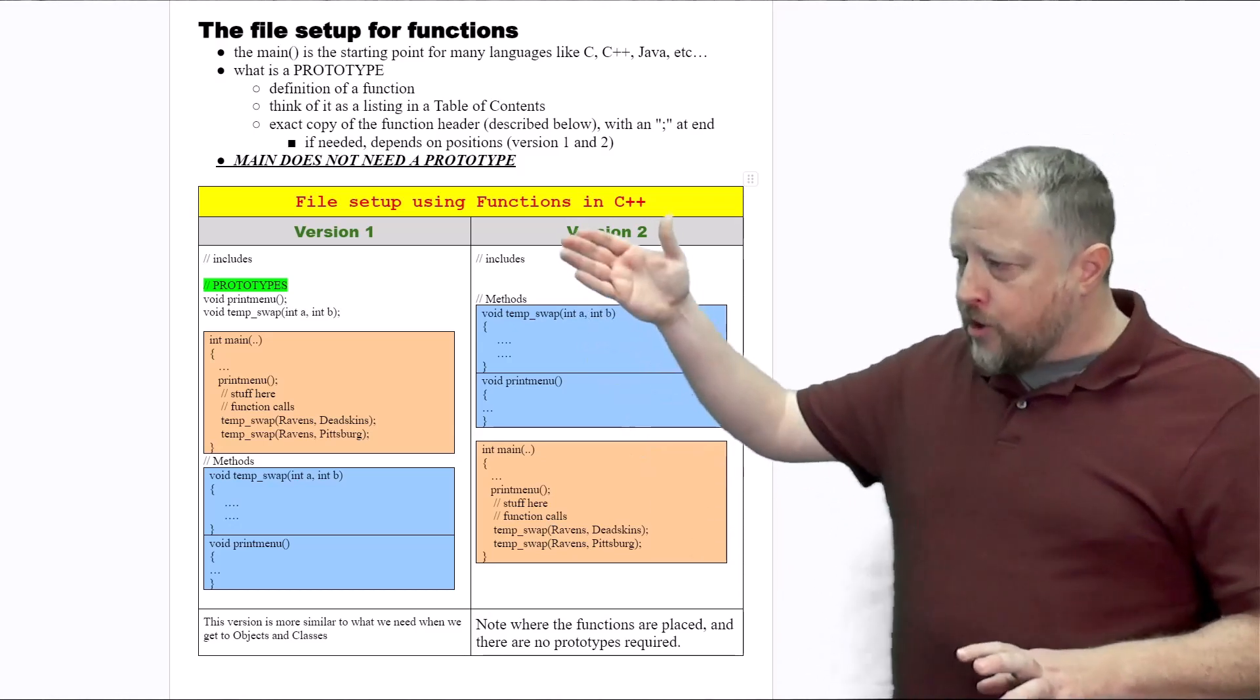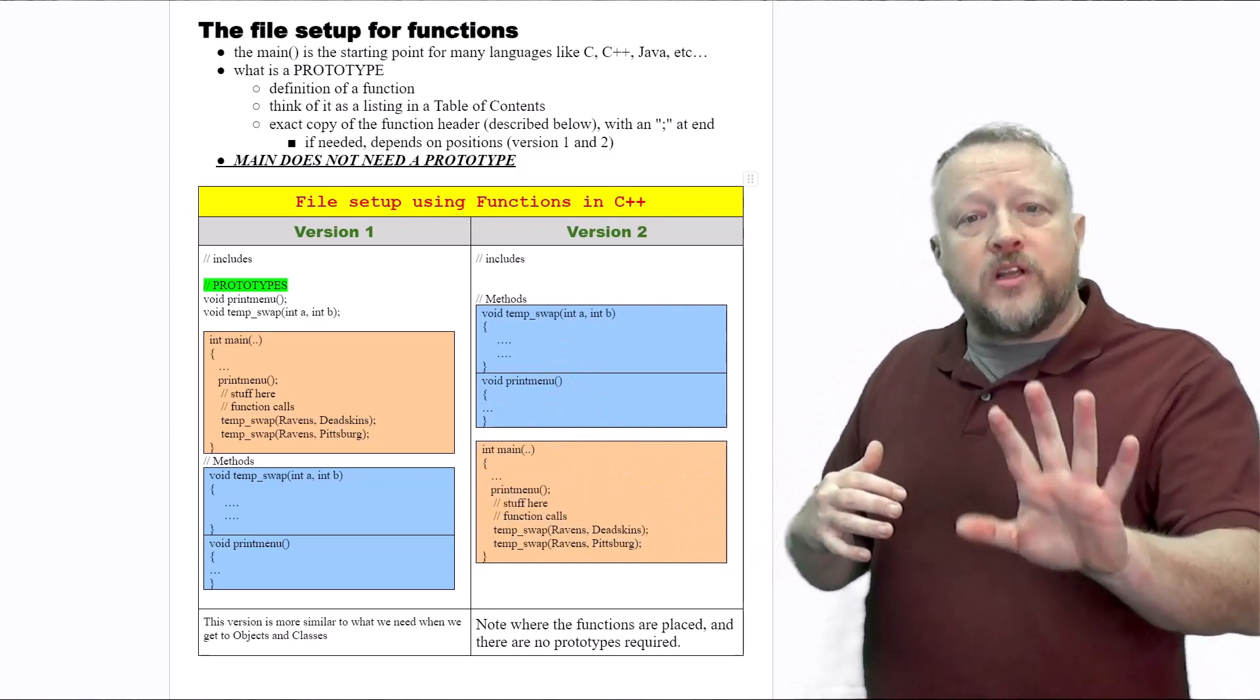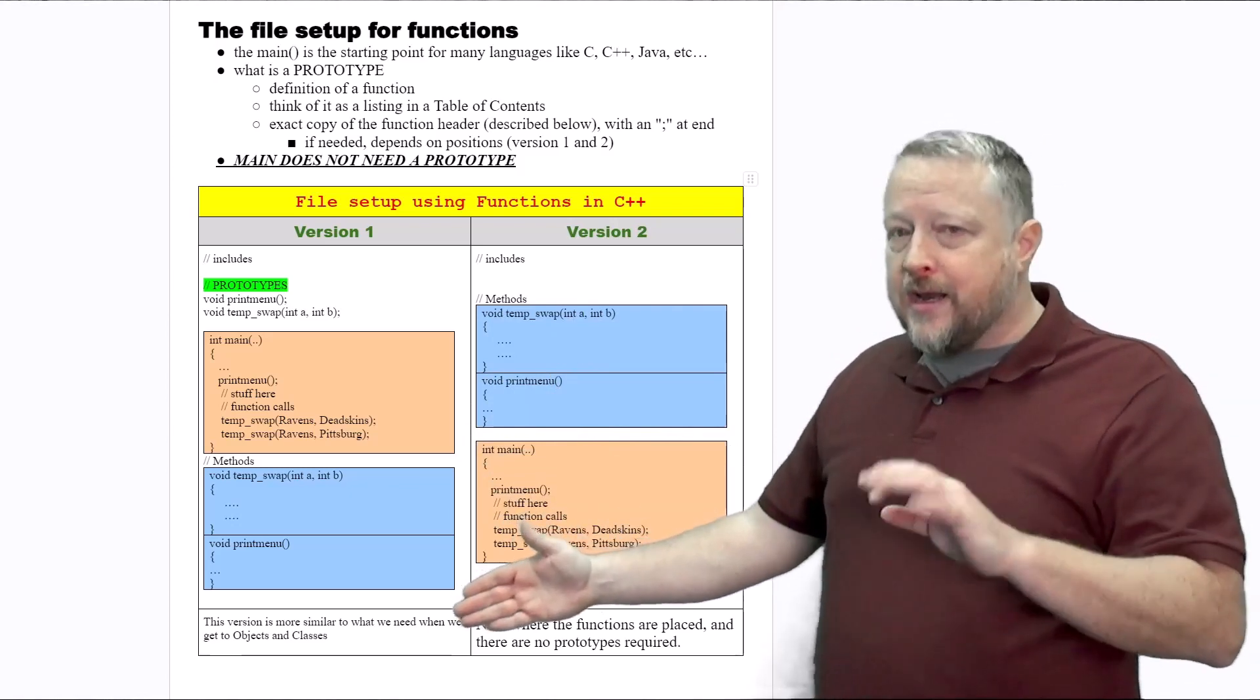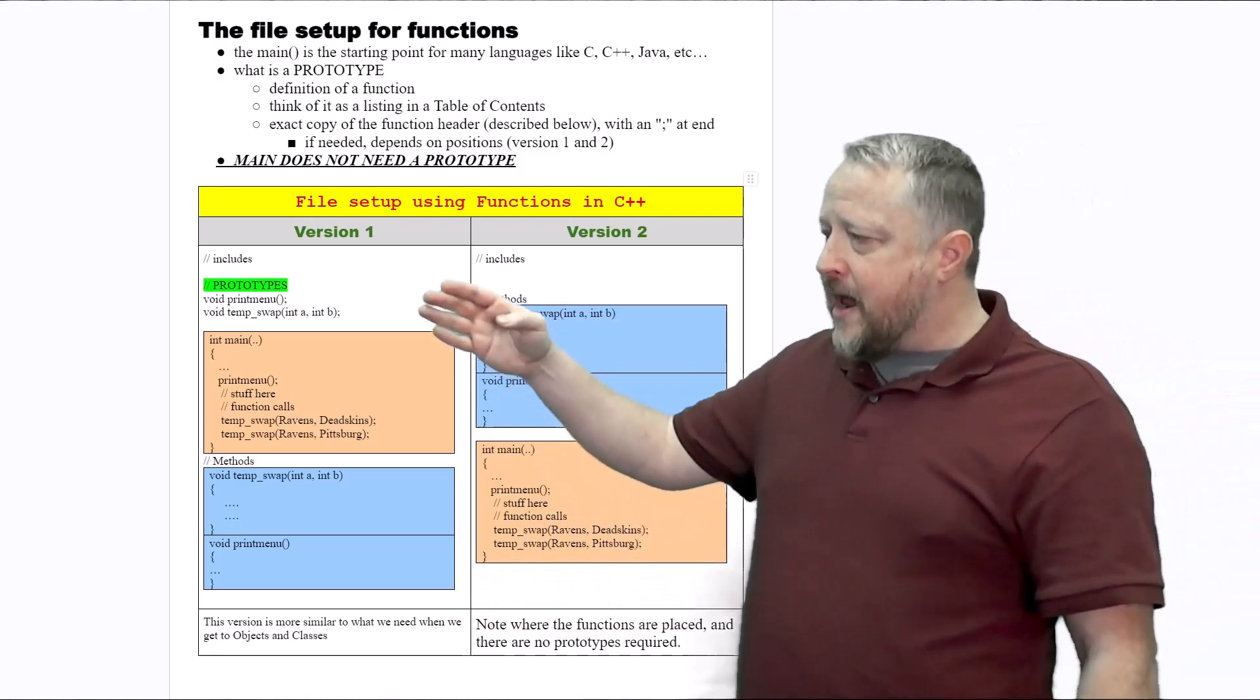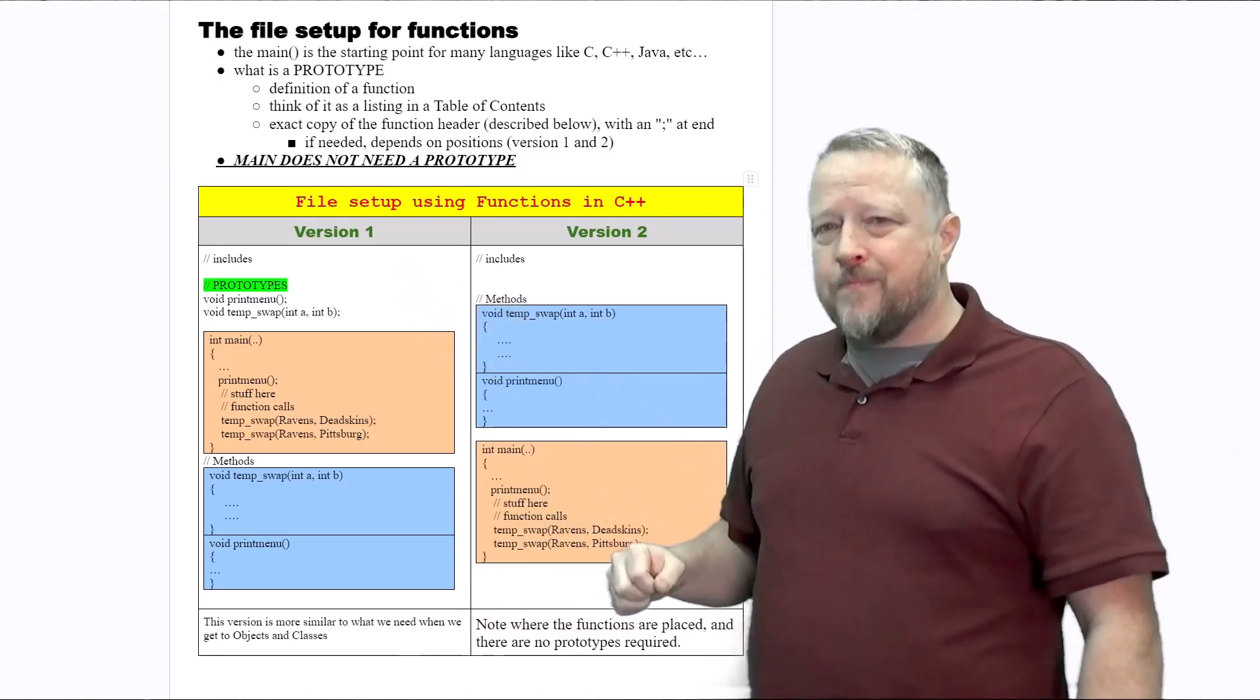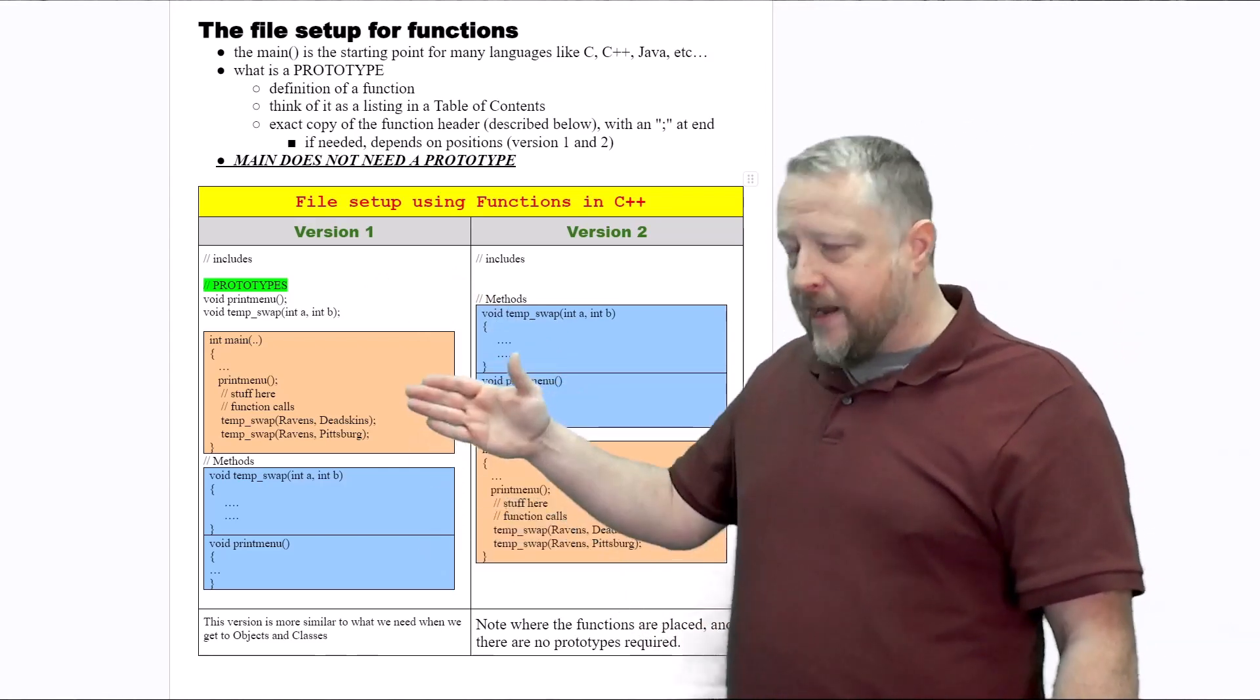So in version one, the long and drawn-out version, and this is the one I prefer only because eventually we'll be getting into objects and classes. You're going to have a prototype. And what does a prototype look like? Well actually, I want you to look at the main first.